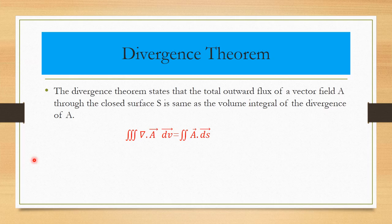Divergence Theorem states that the total outward flux of a vector field A through the closed surface S is the same as the volume integral of the divergence of A. So, divergence theorem relates surface integral and volume integral. The double integral (surface integral) of a vector is equal to the volume integral of the divergence of that vector.